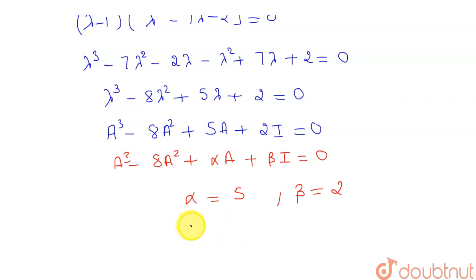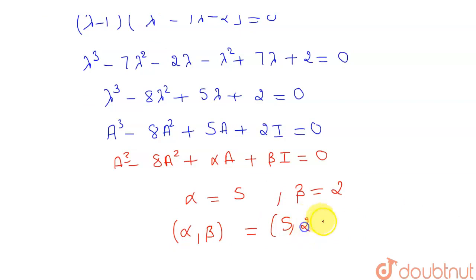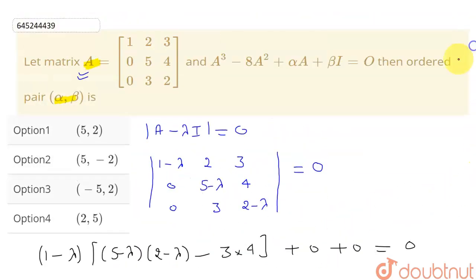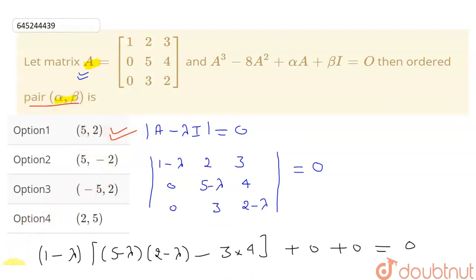So the ordered pair (α, β) = (5, 2). Matching with the options, option 1 is correct with the value (5, 2). Hope you understood. Thank you.